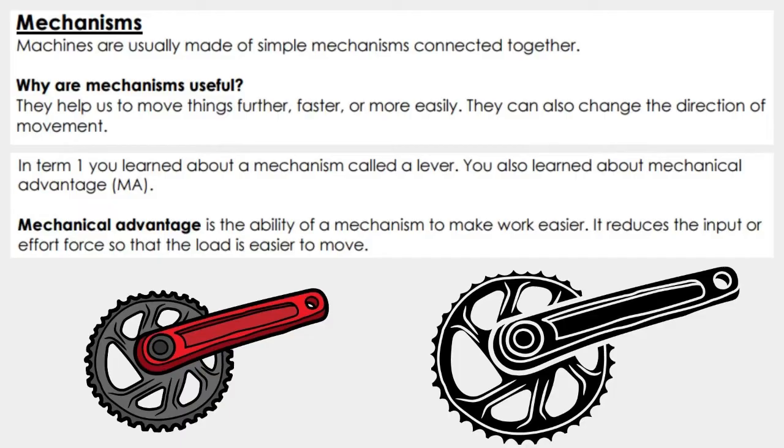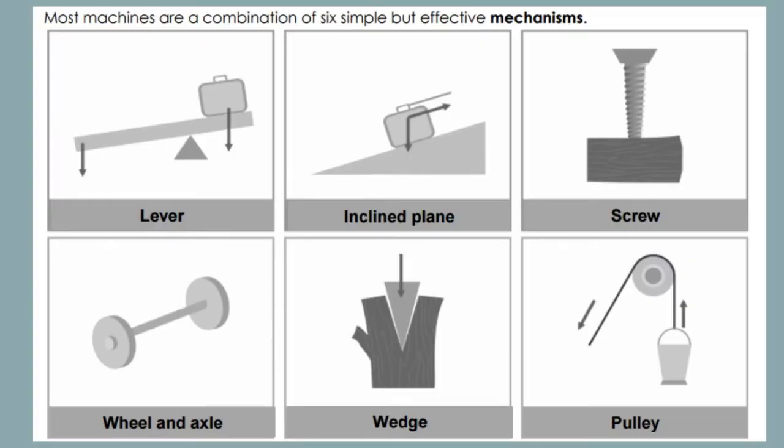Most machines are a combination of six simple but effective mechanisms: Lever, incline plane, screw, wheel and axle, wedge, and pulley.